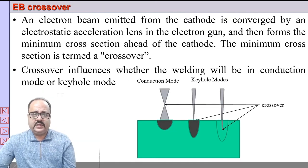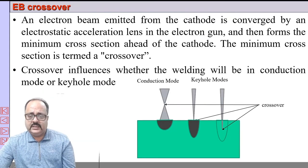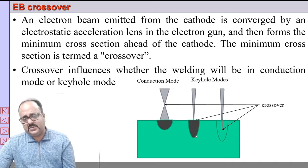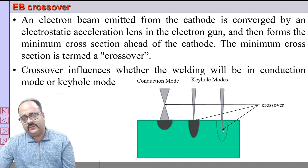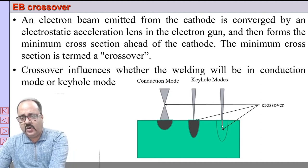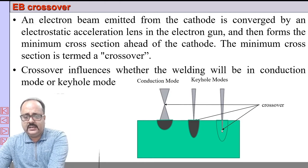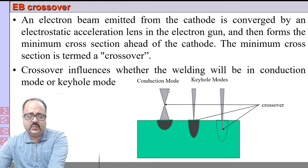If the crossover is slightly above the surface, a shallow, almost semicircular weld bead is obtained. If the crossover is below the surface, a deep-penetration keyhole weld is produced. The former is conduction mode and the latter is keyhole mode.